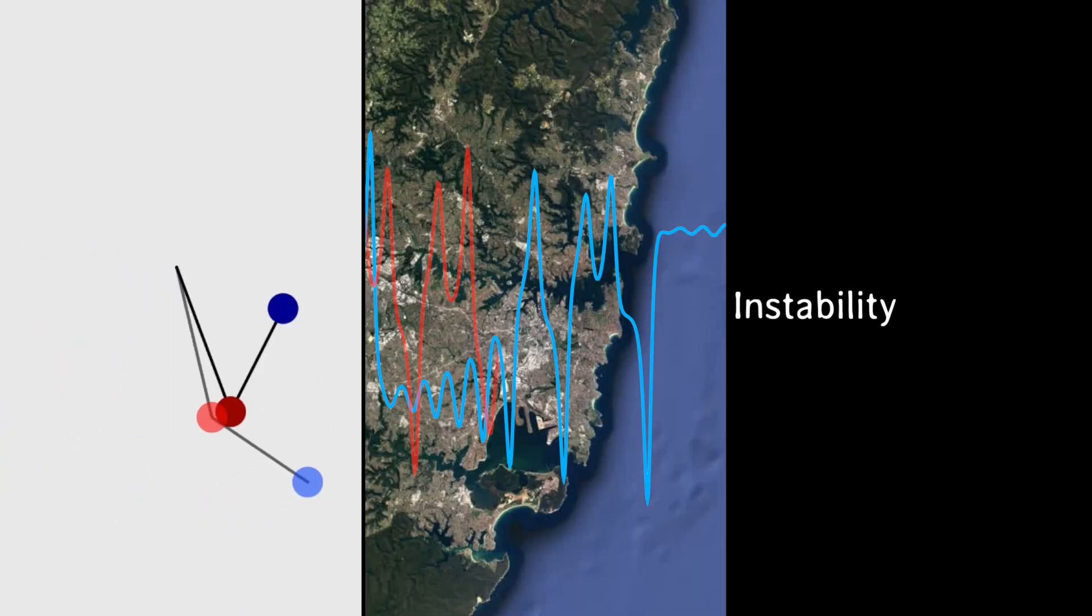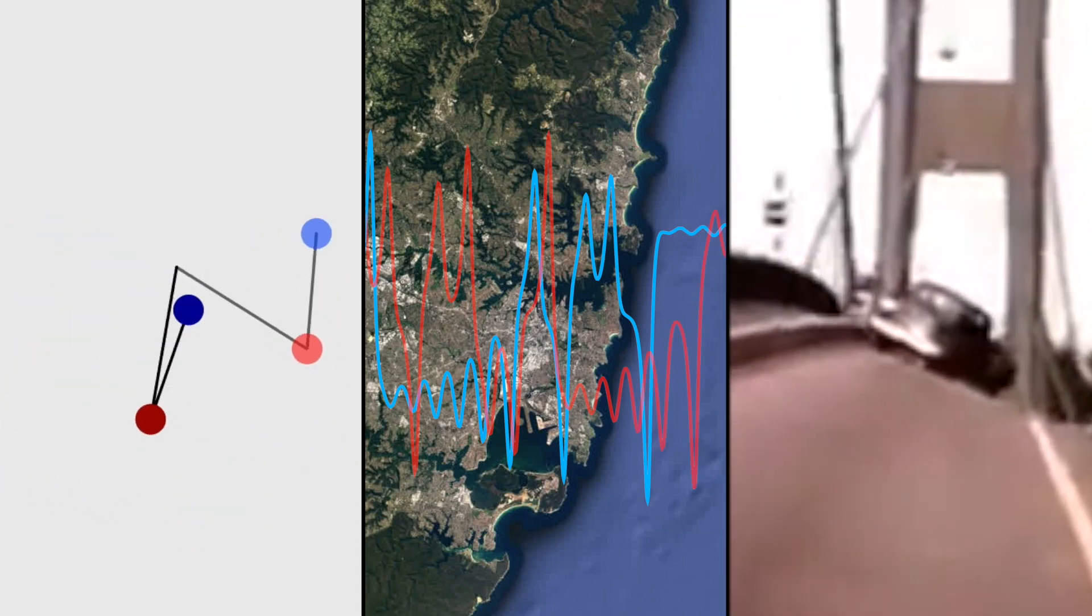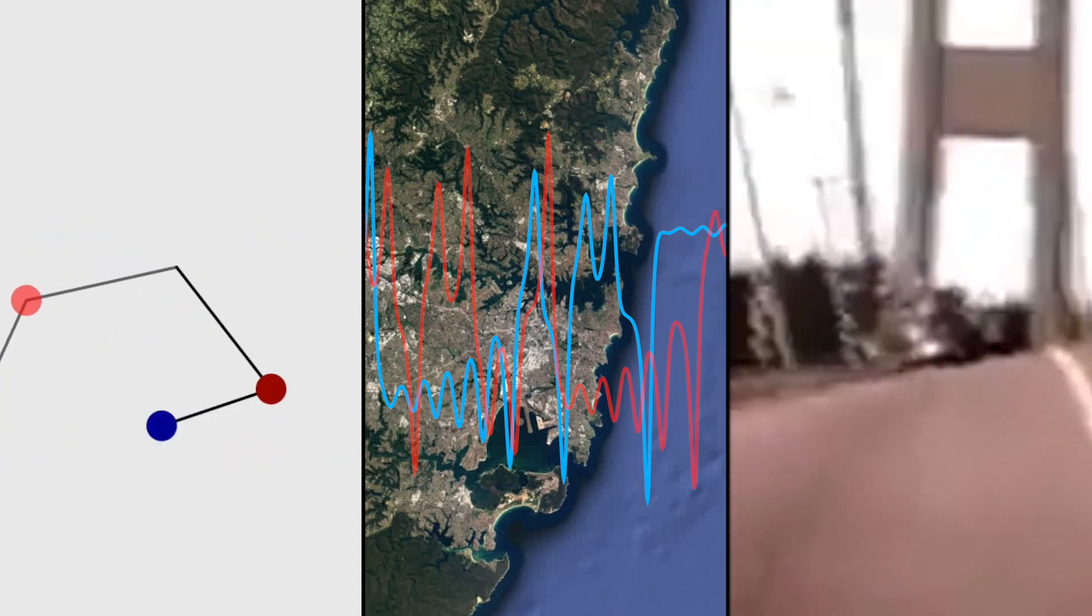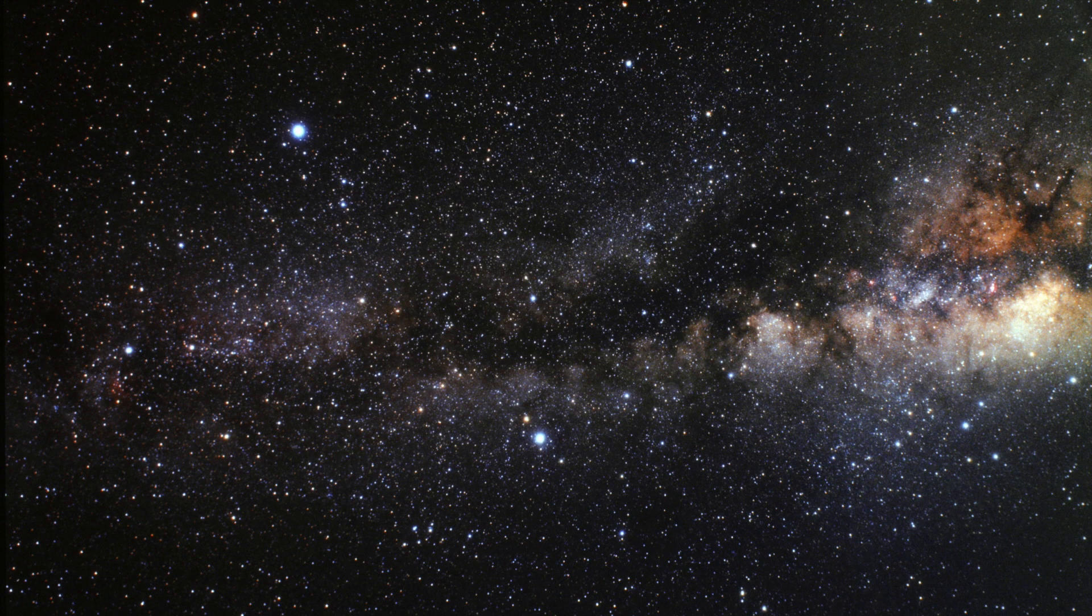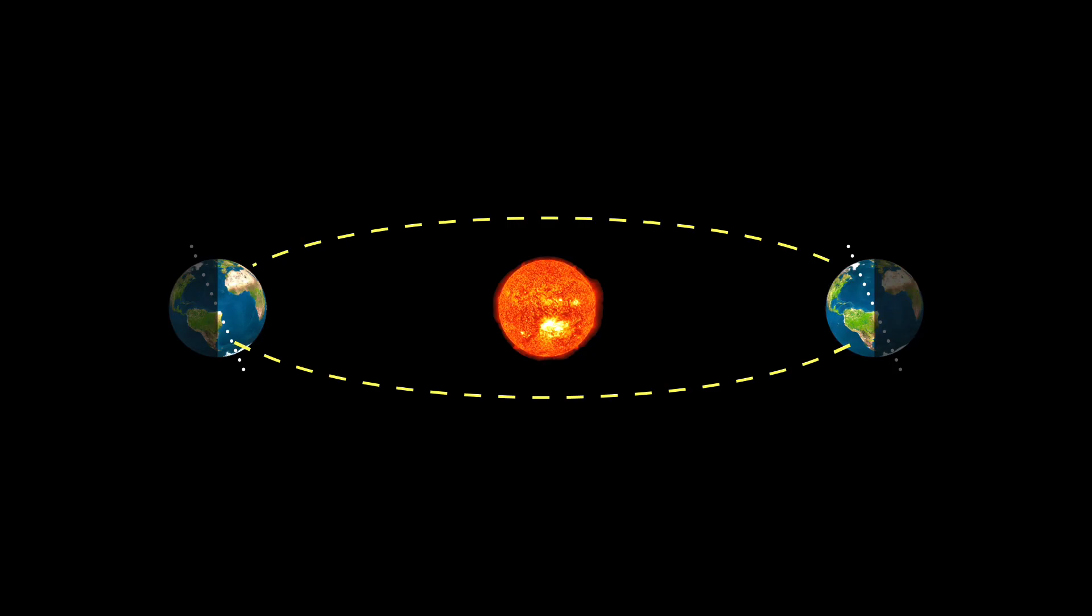Okay, so, the double pendulum is chaotic, we can't predict the weather beyond a few weeks, and even bridges fall down from inherent instabilities. But at least the cosmos is dependable, right? I mean, the seasons come from Earth's orbit around the Sun, and that's stable, right?